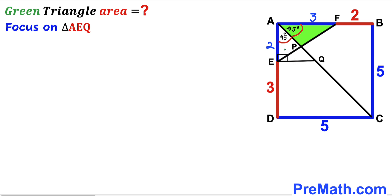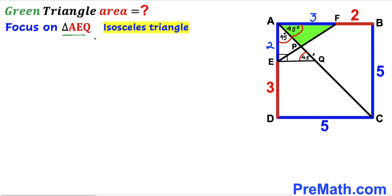Now let's focus on white triangle AEQ. We know this angle is 90 degrees and this angle is 45 degrees. Since the sum of interior angles in a triangle is 180 degrees, this remaining angle has got to be 45 degrees as well. Therefore triangle AEQ is an isosceles triangle, and since it's isosceles, side AE equals side EQ. Since AE is 2 units, EQ is 2 units as well.